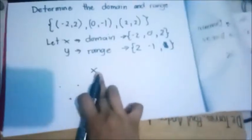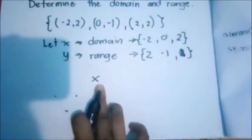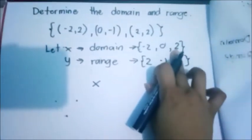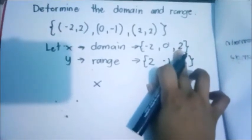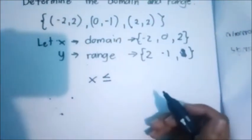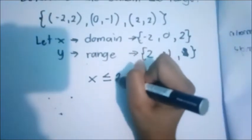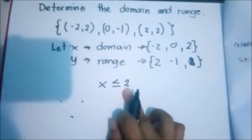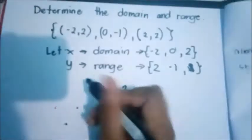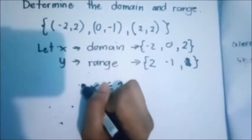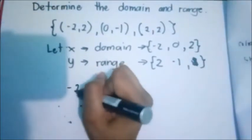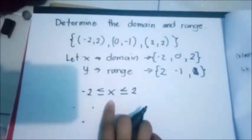So now, our X or the domain is greater than negative 2 and less than or equal to 2. X will be less than or equal to 2. Therefore, 2 is the maximum number of the given domain, or the value of X. And the smaller value is negative 2. So this will be the domain.